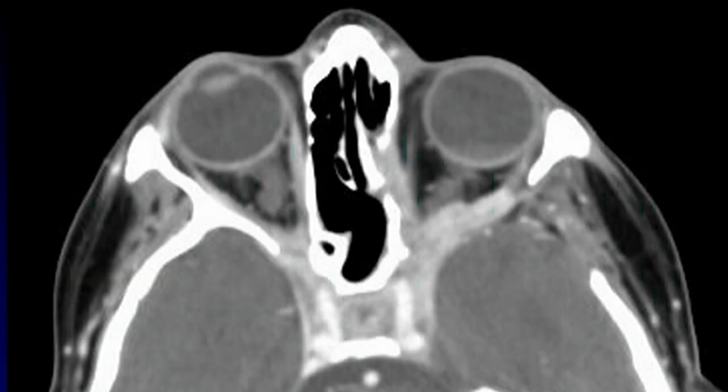This is adenoid cystic carcinoma arising within the lacrimal gland and extending along the branches of the third cranial nerve. Adenoid cystic carcinoma, of course, is famous for perineural spread.